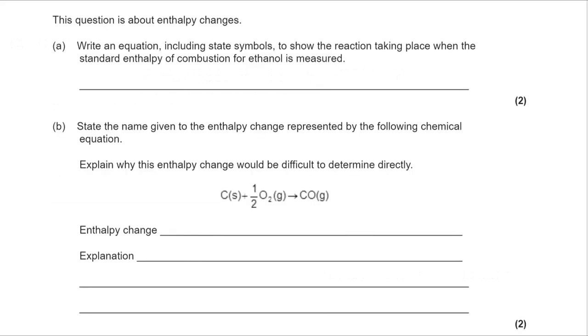Okay, so if we start taking a look at the answers, to begin with we're writing an equation including state symbols to show the reaction taking place in the standard enthalpy of combustion of ethanol. You really do need to know the definitions to be able to do these questions properly. We know that when we combust, we are reacting with oxygen and that's diatomic, we're adding O2. Now we also know in standard enthalpy of combustion it's complete combustion, a ready supply of oxygen, so we're making CO2 and H2O. I can balance out the carbons and the hydrogens as we have done here.